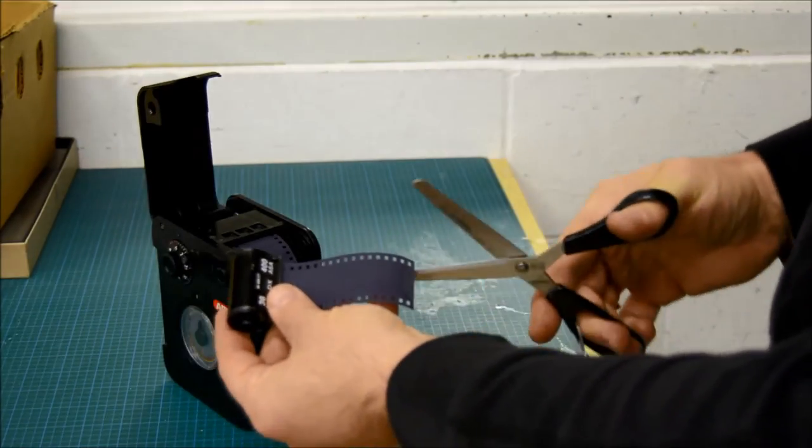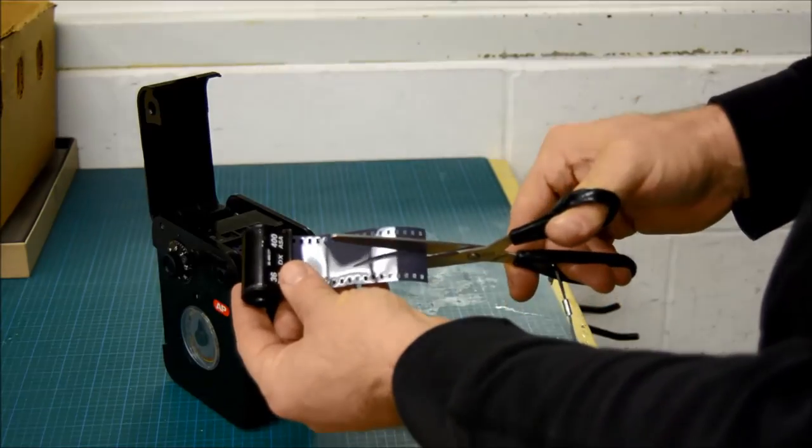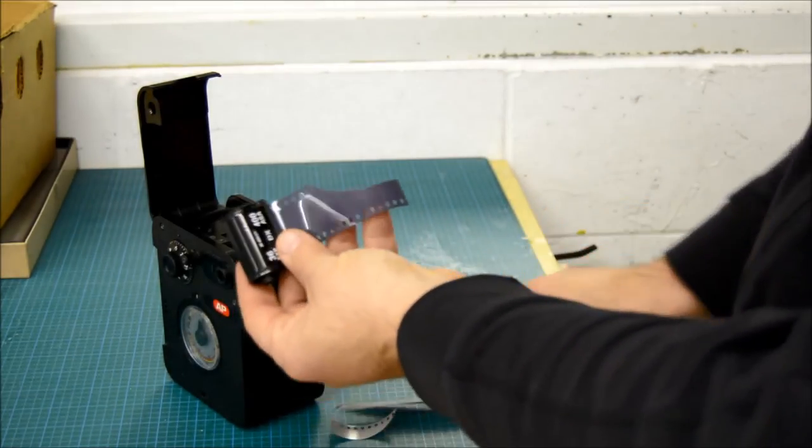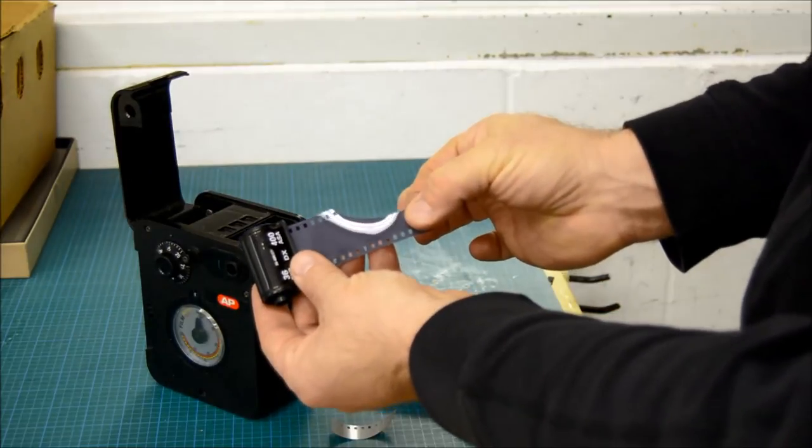And for the lead, for what we need in the camera, we cut up the middle of the film. And then slightly to the right. This is the lead that goes into the camera and keeps it tight.